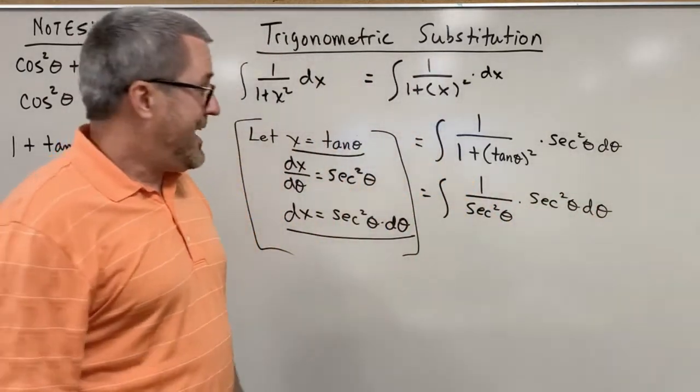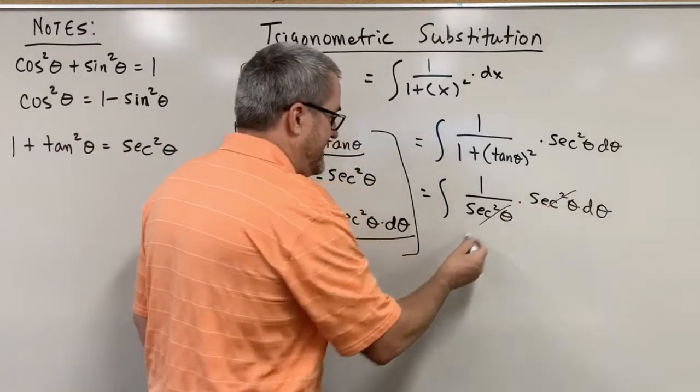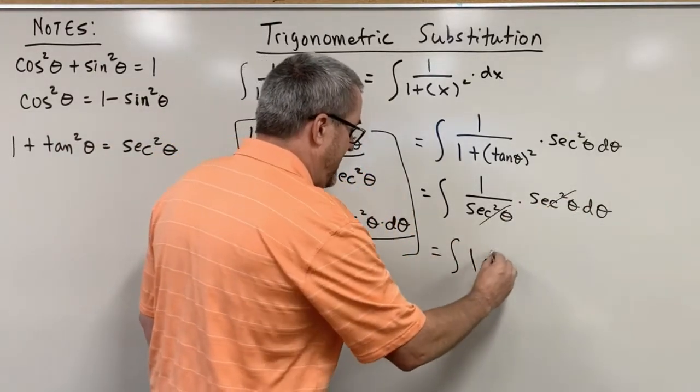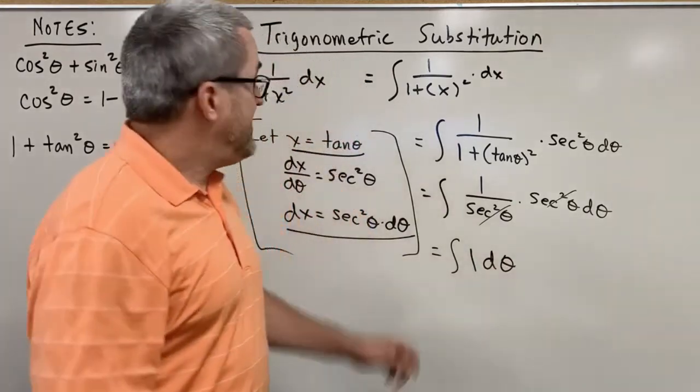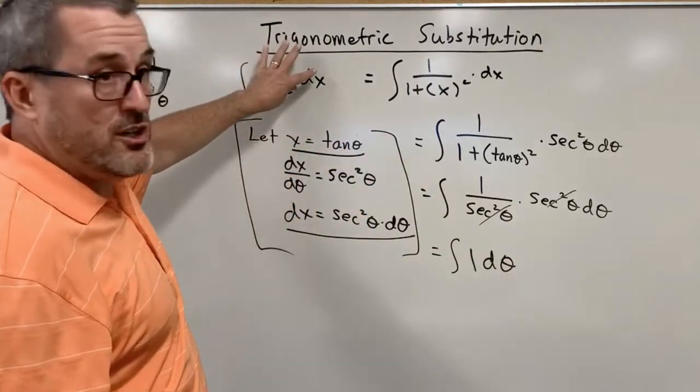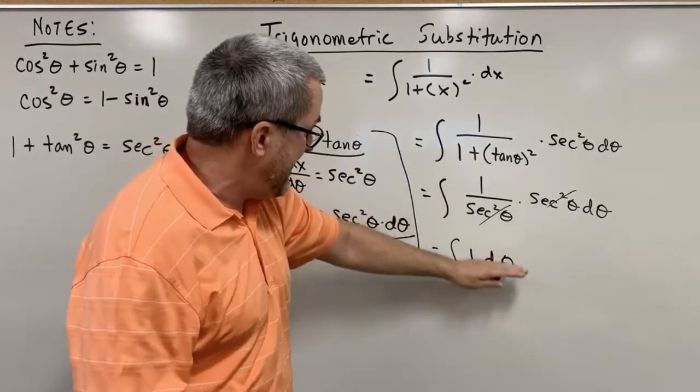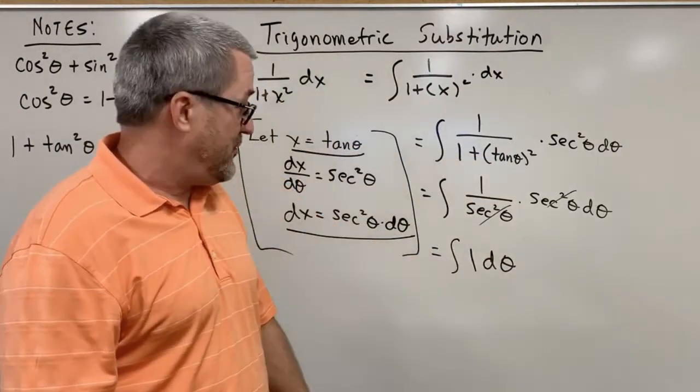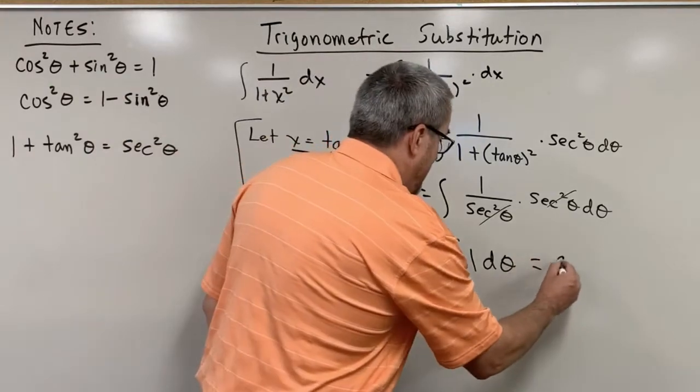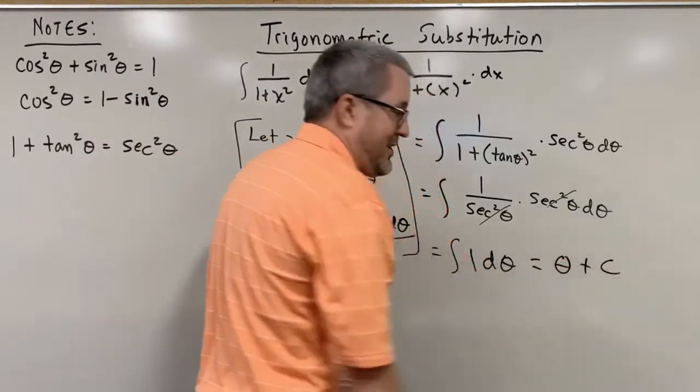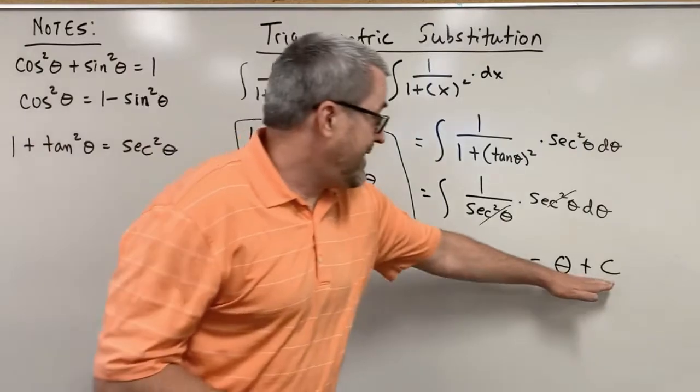So now it should be obvious that this simplifies to just become the integral of 1 d theta. We've taken something that was a struggle for us and transformed it into a structure that ultimately gives us the integral of 1 d theta, which is theta plus your integration constant, plus C.